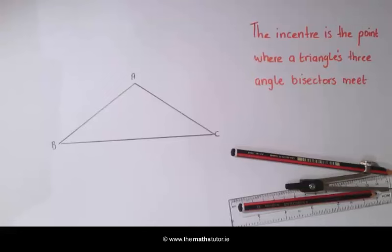We are going to construct the in-center and in-circle of a given triangle using only a straight edge and a compass. In this example we are going to construct the in-center and then the in-circle of the triangle ABC.